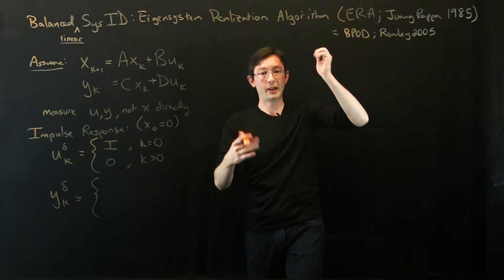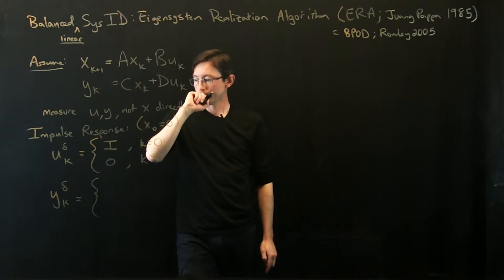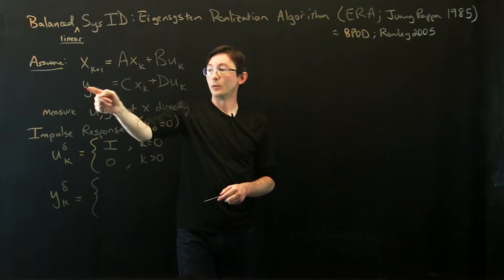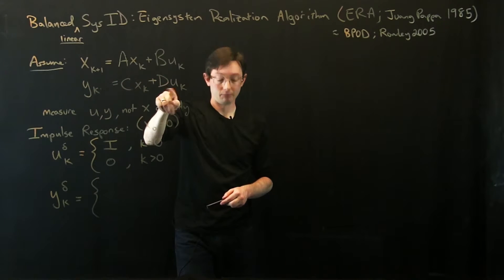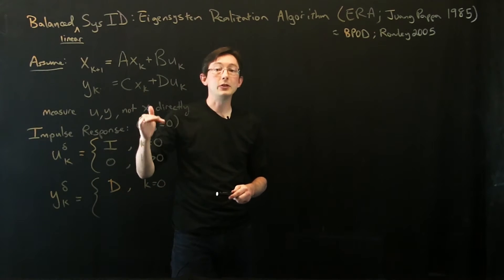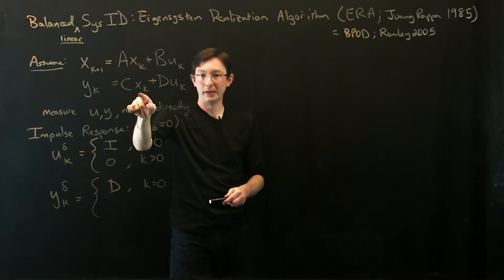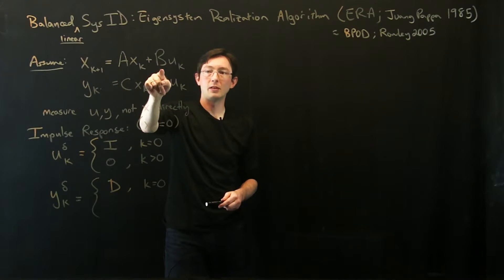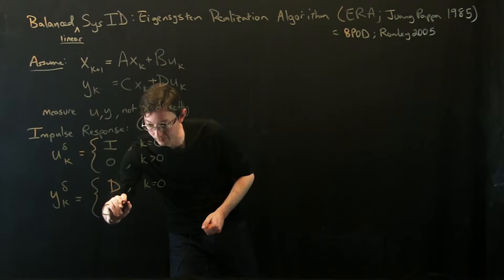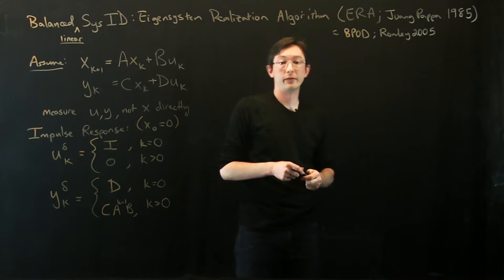So it starts at rest. I whack it with a hammer. That's my impulse response, and I measure how the system evolves. So if X was zero at time zero, and I give you an impulse, an input, then Y zero equals D. That's D at time step K equals zero. And then for all future time steps, now X equals B, and then X equals, so Y equals CB. Then X would equal AB, and Y would equal CAB, and so on and so forth. So this will be C A to the K minus one B for all positive K.